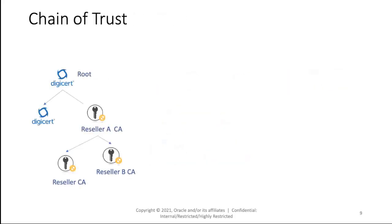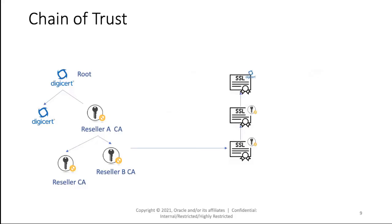Talking about the chain of trust: if your browser went to a website that had a certificate from Reseller B, it might not trust it because it might not know who it is. So the next thing it would do in the certificate chain is check Reseller A, the next CA in the hierarchy. If it didn't trust that, it goes all the way up to the root certificate — DigiCert — which it's pretty likely to trust. And therefore, because we trust DigiCert, we trust Reseller B CA's certificate.